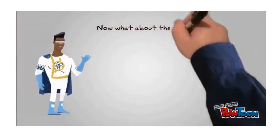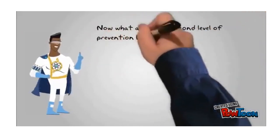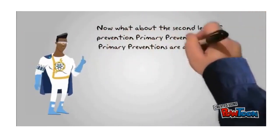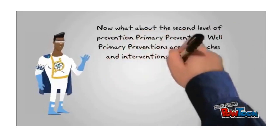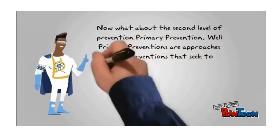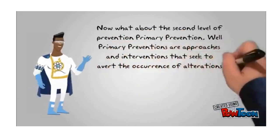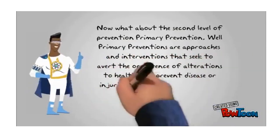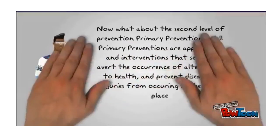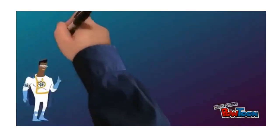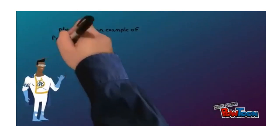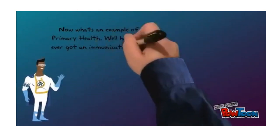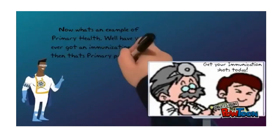The second level of prevention is primary prevention. Primary preventions are approaches and interventions that seek to avert the occurrence of alterations to health and prevent diseases or injuries from occurring in the first place. An example of primary prevention is getting an immunization shot.